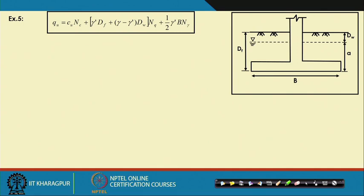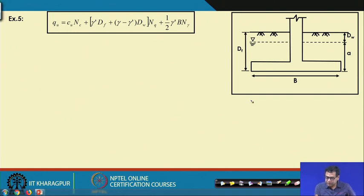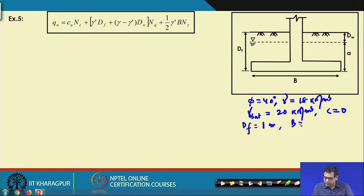We are taking the same problem from the previous class: a foundation in homogeneous soil with φ = 40°, unit weight above the water table γ = 18 kN/m³, γ_sat = 20 kN/m³, cohesion c = 0, depth of foundation Df = 1 m, B = 3 m, L = 6 m, and unit weight of water γ_w = 10 kN/m³.